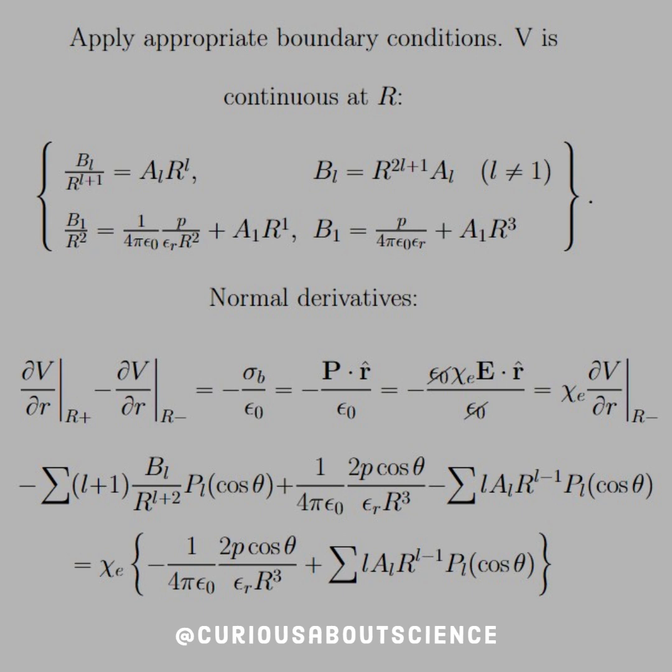For L not equal 1, we have that BL is equal to R squared R raised to the 2L plus 1 times AL. That's pretty simple. Just use your orthogonality. Exploit that again. Cancel out what you can with the cosines.